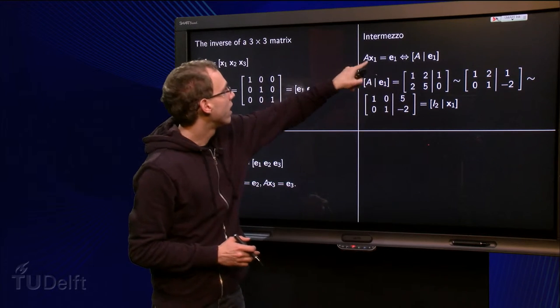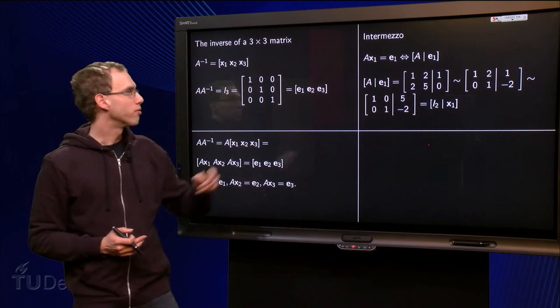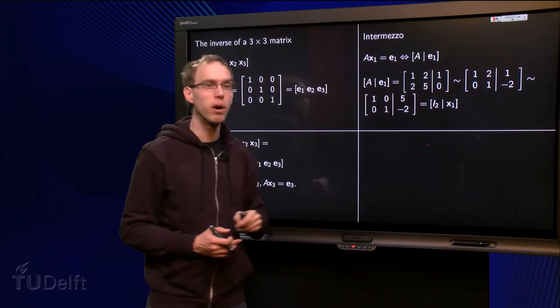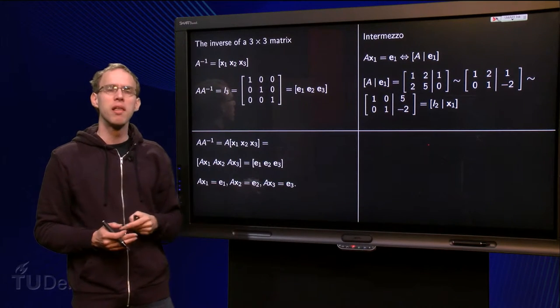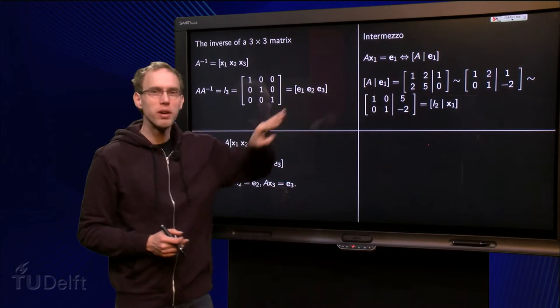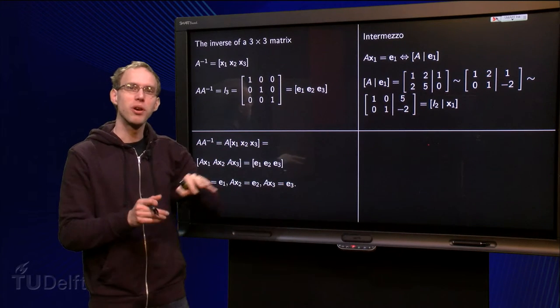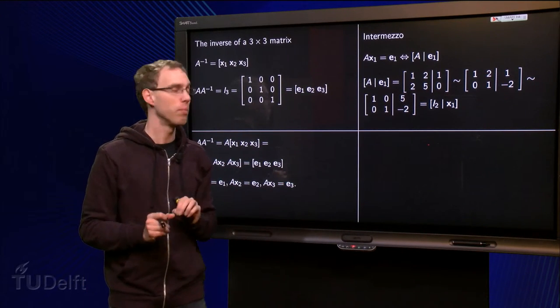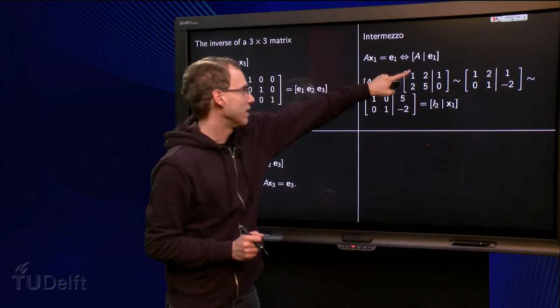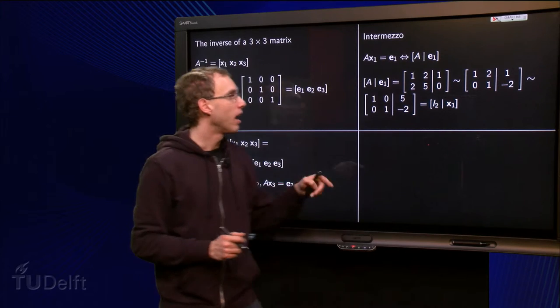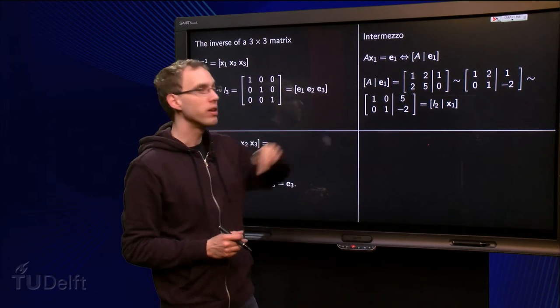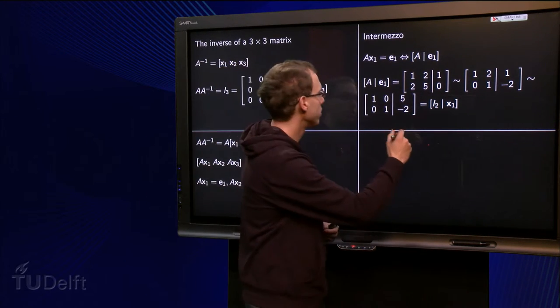So if we have a problem of form Ax1 equals e1, then we form the augmented matrix A and augment with e1. And let us do a slightly smaller 2 by 2 problem to show what is going to happen, as an example. So we form the augmented matrix e1, and if we want to find x1, we have to do a row reduction. So let's see, minus 2 over here.